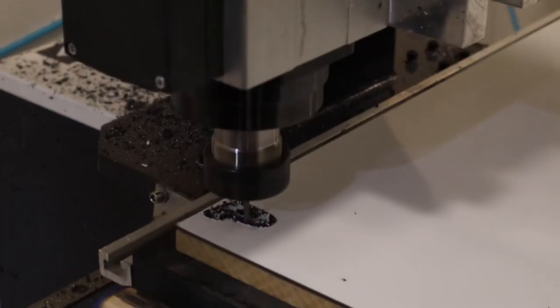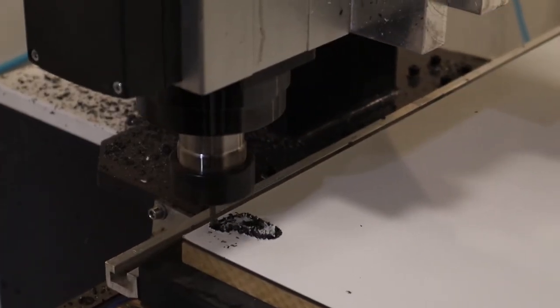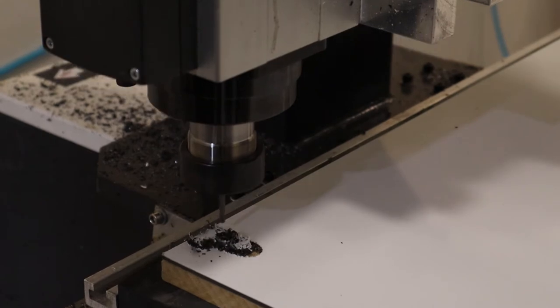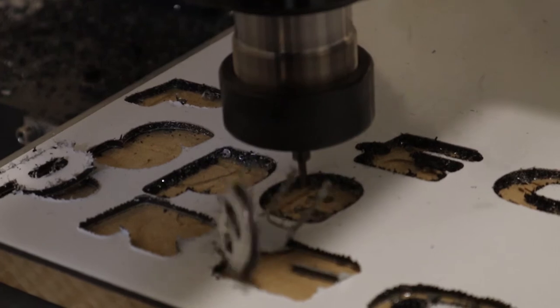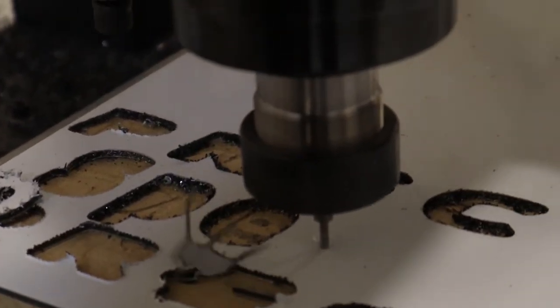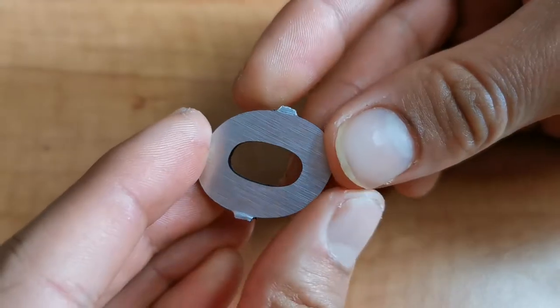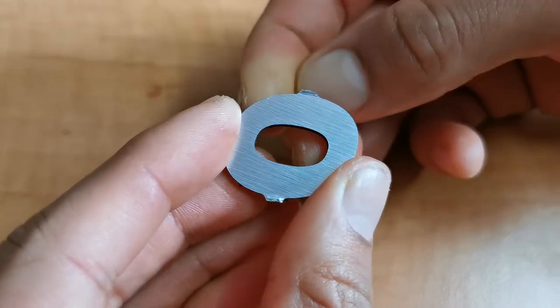One thing to consider, however, is that these small letters tend to move a little bit at the end of the pass and in many cases they fly away. One solution is using tabs at the time of the design. We did this and the results were quite good.